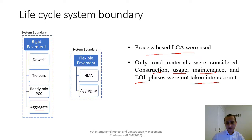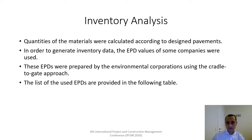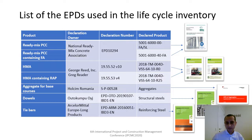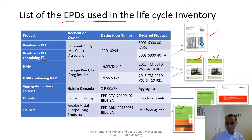For the inventory analysis, quantities of materials were calculated according to design parameters. In order to generate inventory data, the EPD values of some companies were used. These EPDs were prepared by environmental corporations using the cradle-to-gate approach. The list of EPDs used is provided in the following table. The EPDs cover ready-mix concrete with and without fly ash, hot-mix asphalt with and without reclaimed asphalt pavement, tie bars, dowel bars, and aggregates used in the base courses.